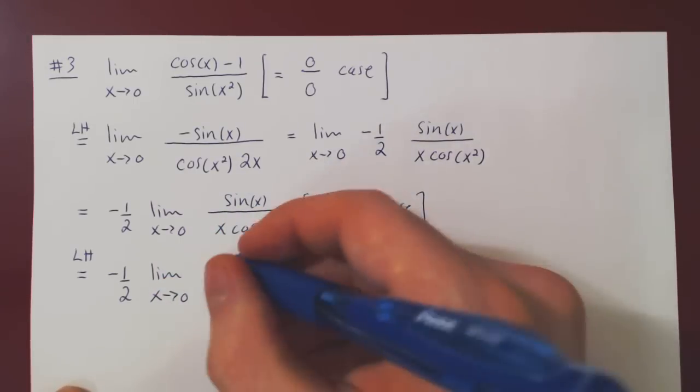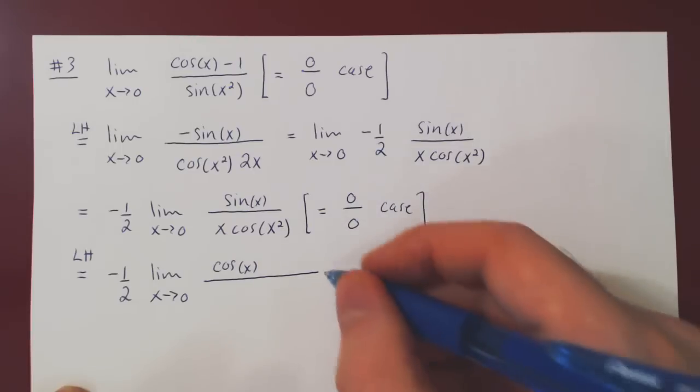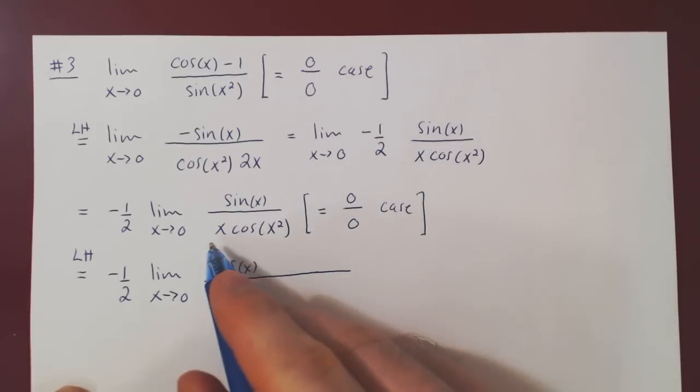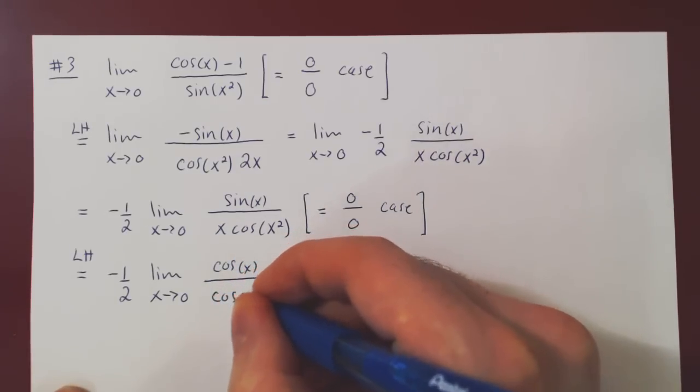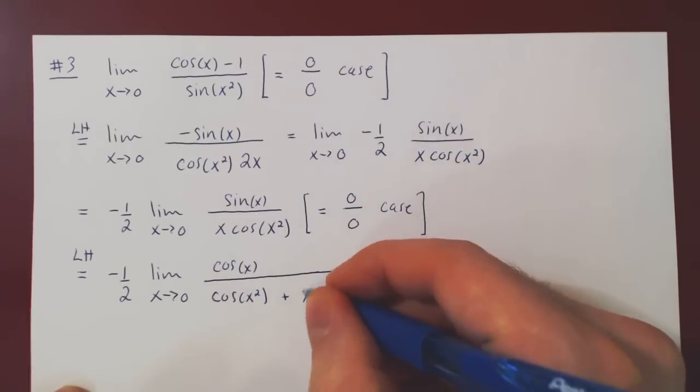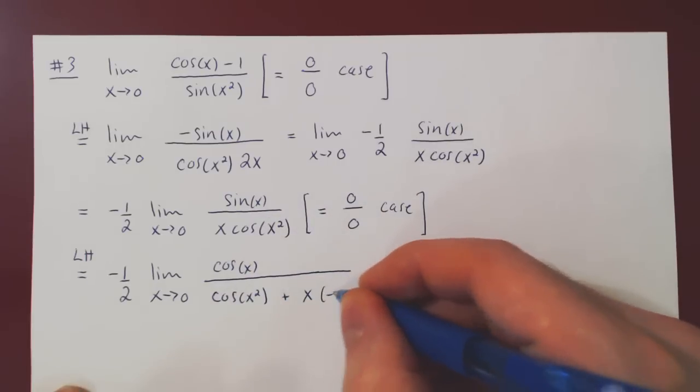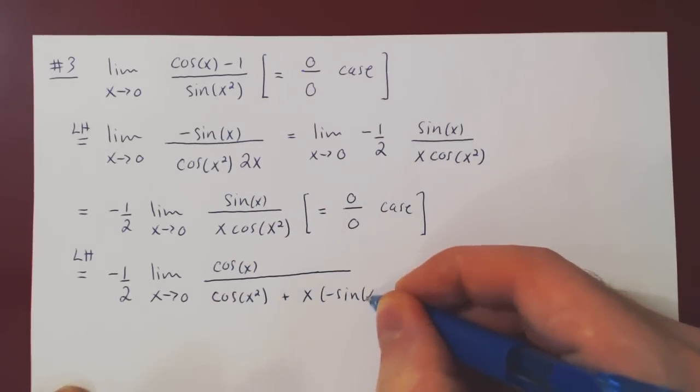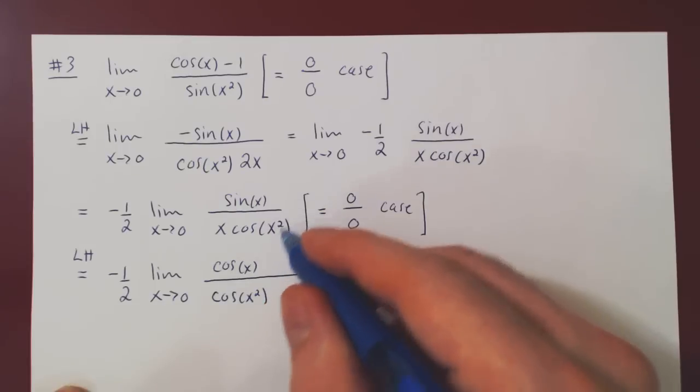Derivative of sin is cosine over, and now we must use the product rule. Derivative of x is 1 times cos of x squared, plus x times the derivative of cos of x squared. Derivative of cos is negative sine of x squared times chain rule of the derivative of x squared, which is 2x.